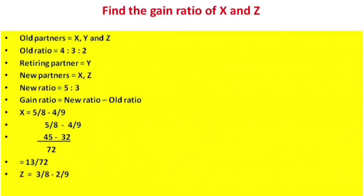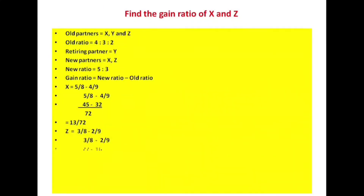3/8 minus 2/9: LCM is 72. So 3/8 becomes 27/72 and 2/9 becomes 16/72. Therefore 27 minus 16 equals 11 by 72. Z's gain ratio is 11 by 72. So the gain ratio X to Z is 13/72 to 11/72, giving X:Z gain ratio of 13:11.